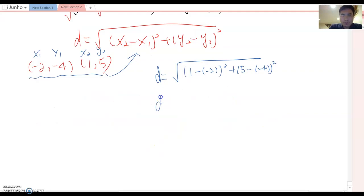So d becomes √(3² + 9²). So this becomes √(9 + 81) = √90. So d = 3√10.